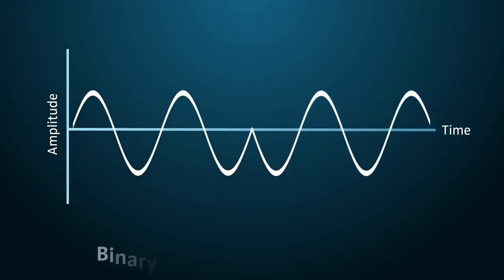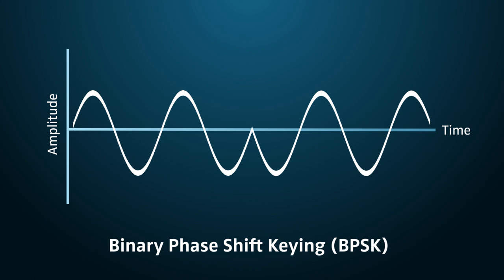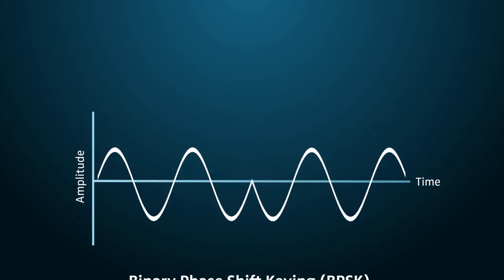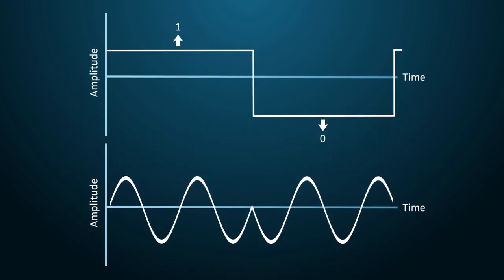Binary phase shift keying, or BPSK, changes the carrier signal between two phases that are 180 degrees apart, with each representing either a 1 or a 0.